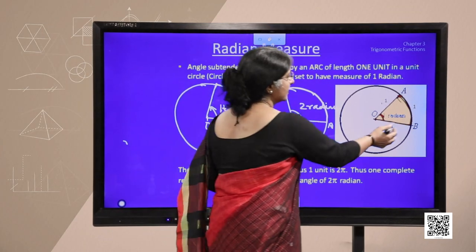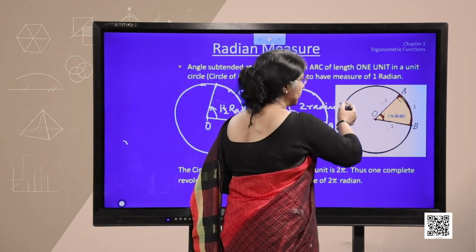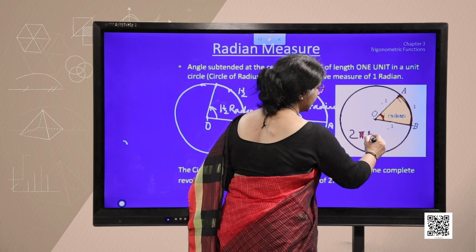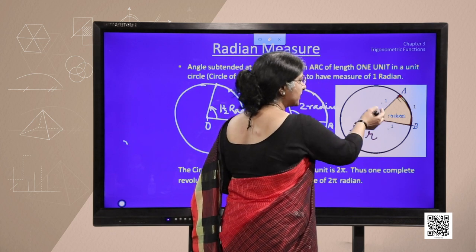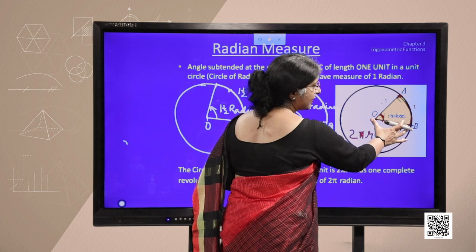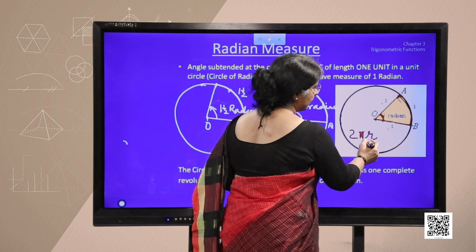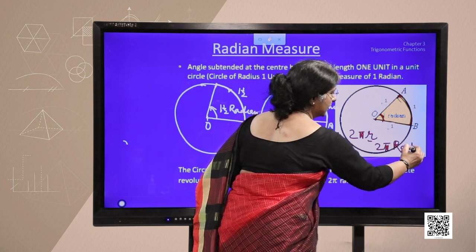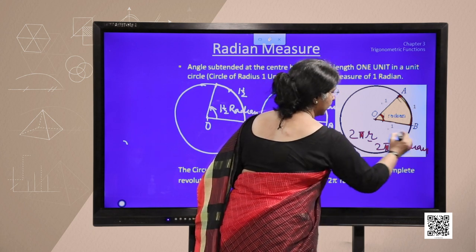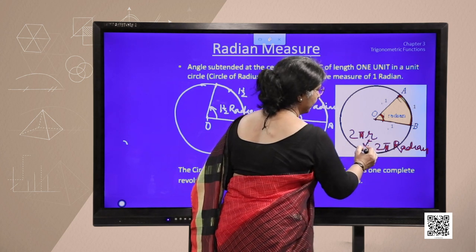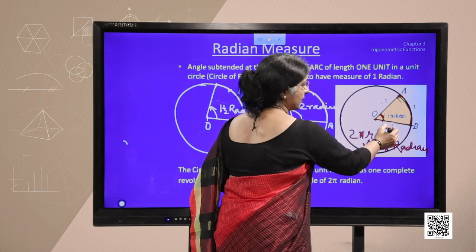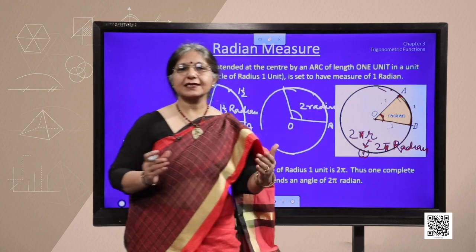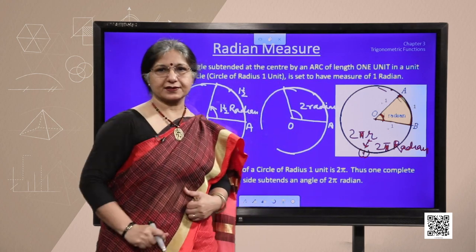Now we consider that arc traces the complete revolution of the circle which is circumference. Circumference is 2π r, here the angle traced is 2π r. But, since the radius is 1 unit, if we replace it by 1, so angle traced is 2π radian. For a complete revolution, we can say it traces an angle of 2π radians.